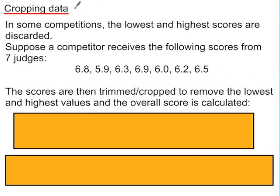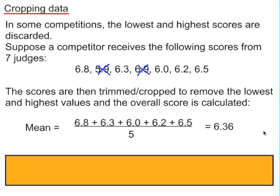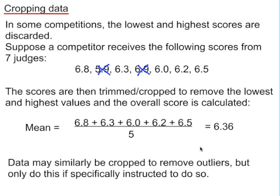Sometimes data is cropped before performing calculations. A competitor receives scores from seven judges, but before calculating the overall score we remove the highest and lowest values — removing 5.9 and 6.9 — and use the five middle values to calculate the mean. We can also crop data to remove outliers, but you should only do this if specifically instructed to. If not instructed to crop the data, work with the full set.